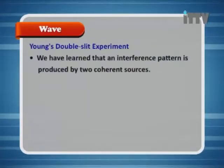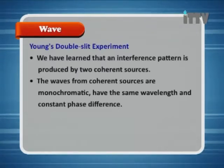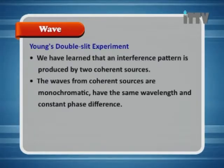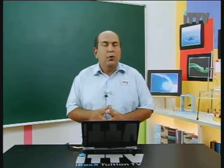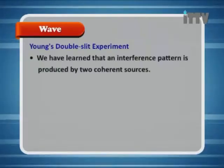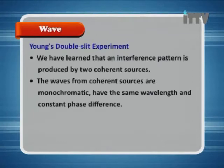We have learned that an interference pattern is produced by two coherent sources. The waves from coherent sources are monochromatic, have the same wavelength, and constant phase difference. Remember, we're talking about light here, which is why we've made a reference to monochromatic. Monochromatic is light that only contains one color, meaning only red, blue, or green — it doesn't contain a combination. For example, yellow is actually the colors red and green put together. In 1801, Thomas Young succeeded in producing interference of light, and this established the wave nature of light. This experiment is called Young's Double Slit Experiment.